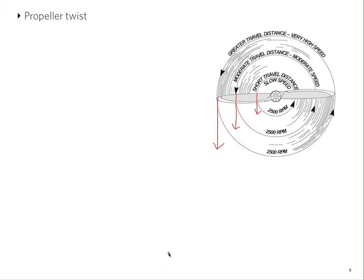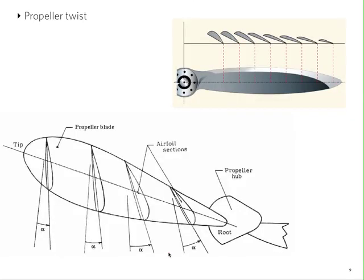So aircraft manage this issue by having propeller twist. However, birds twist their wings in flight to produce the same result.